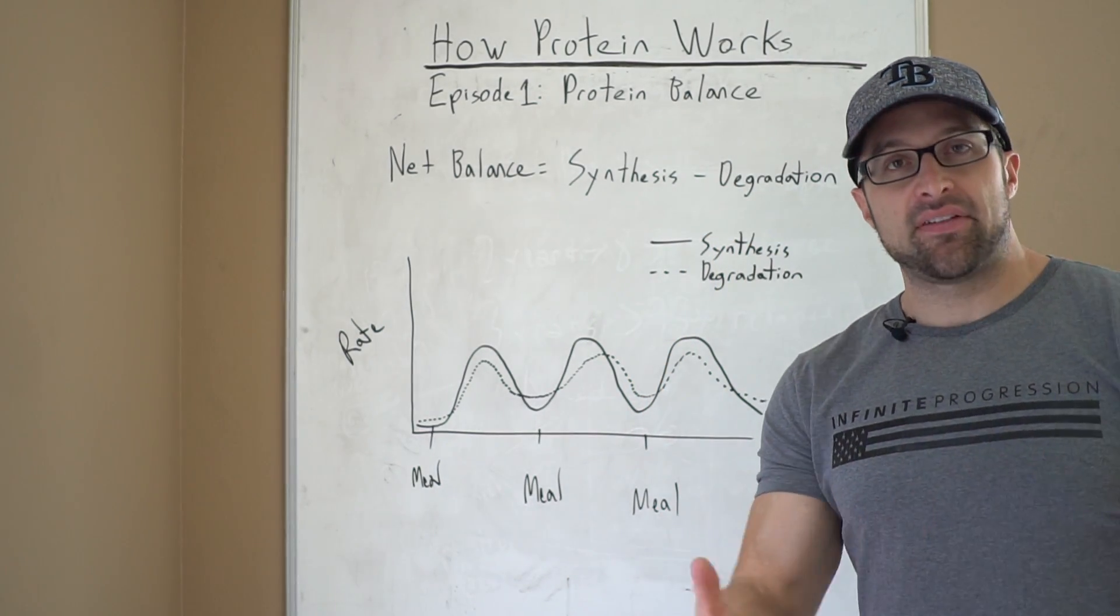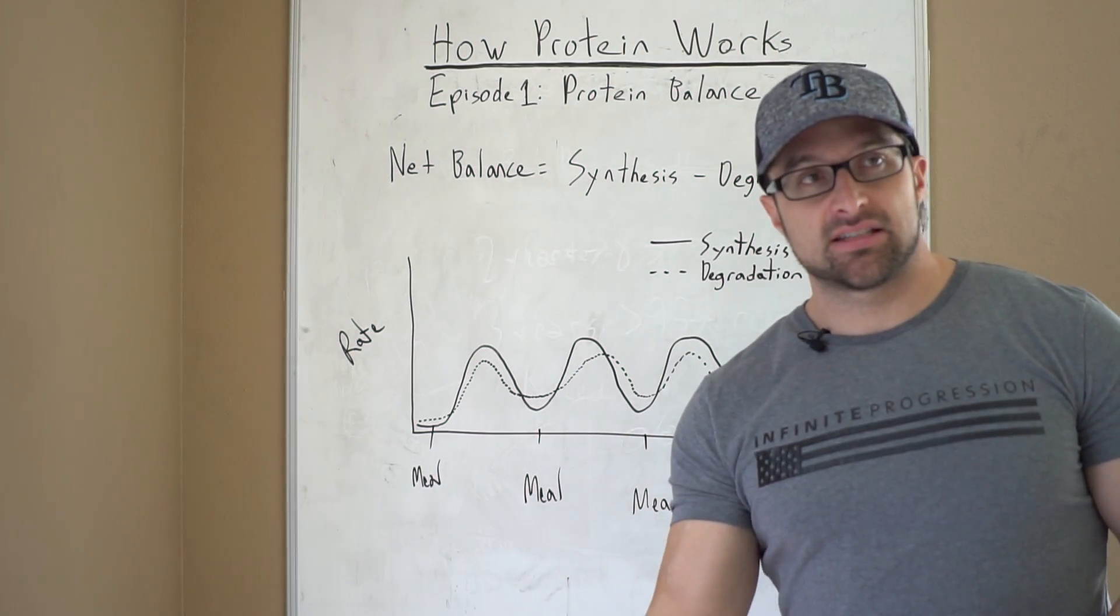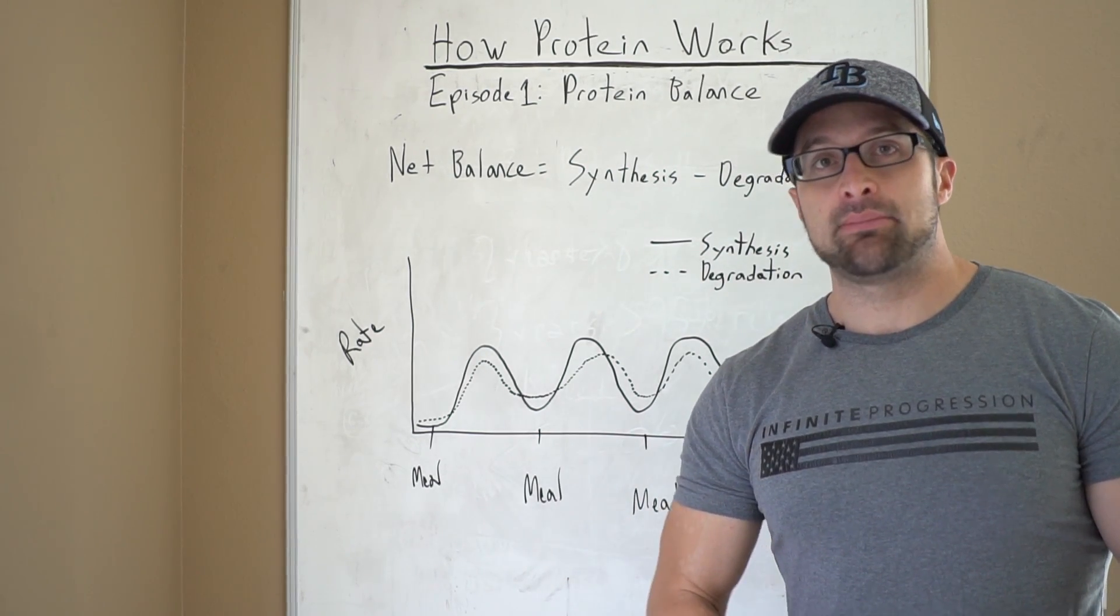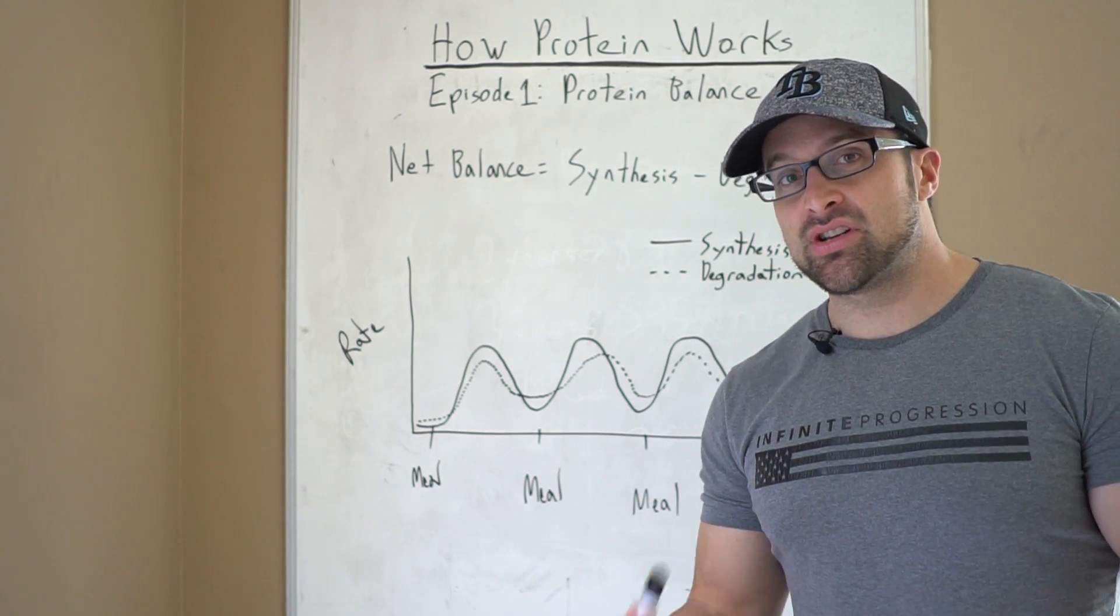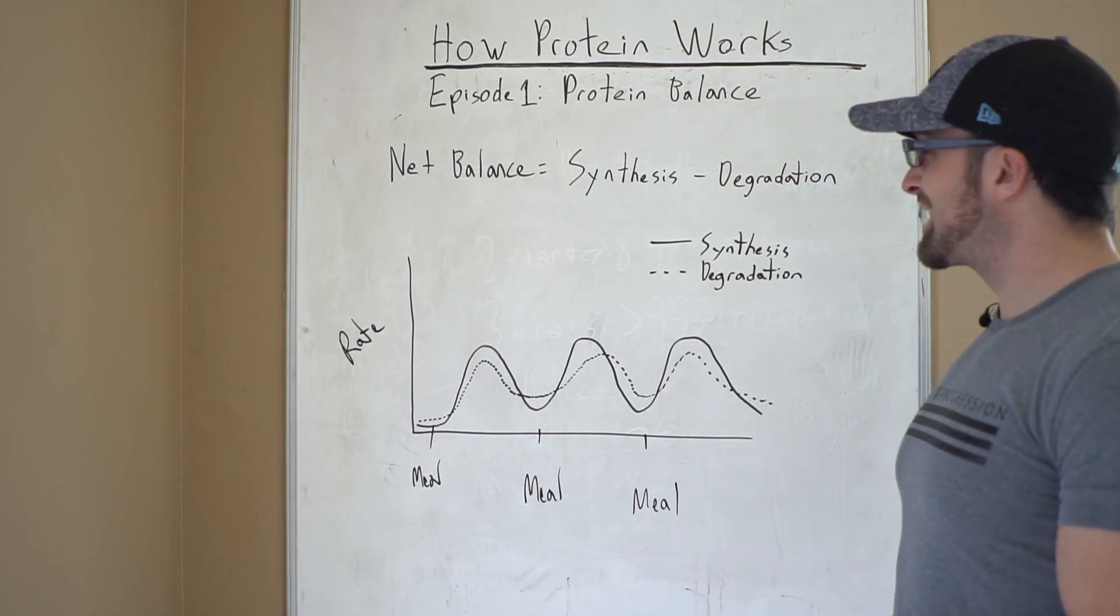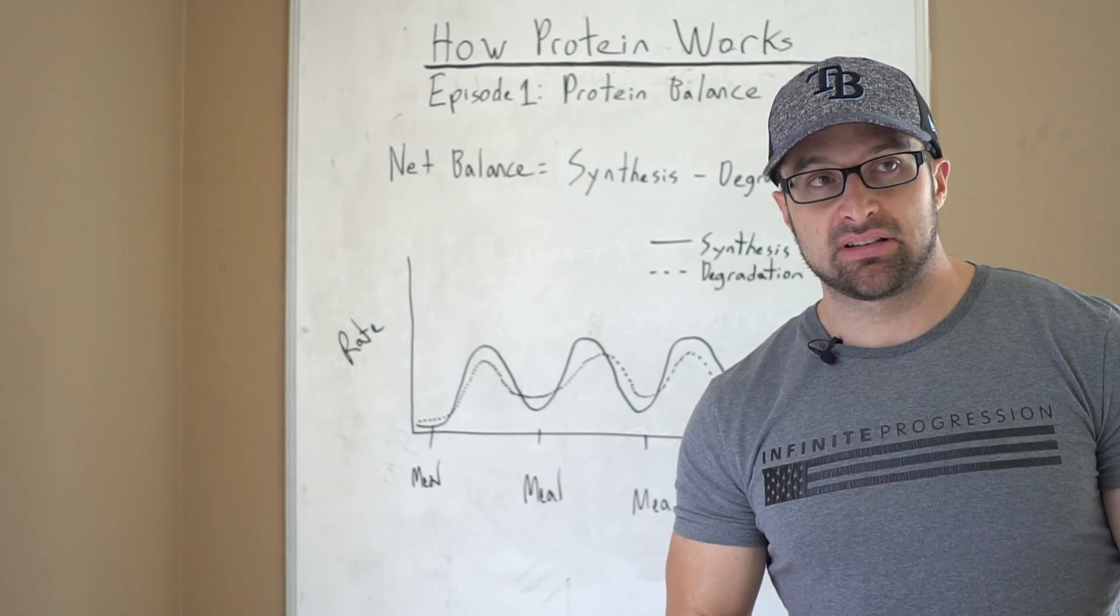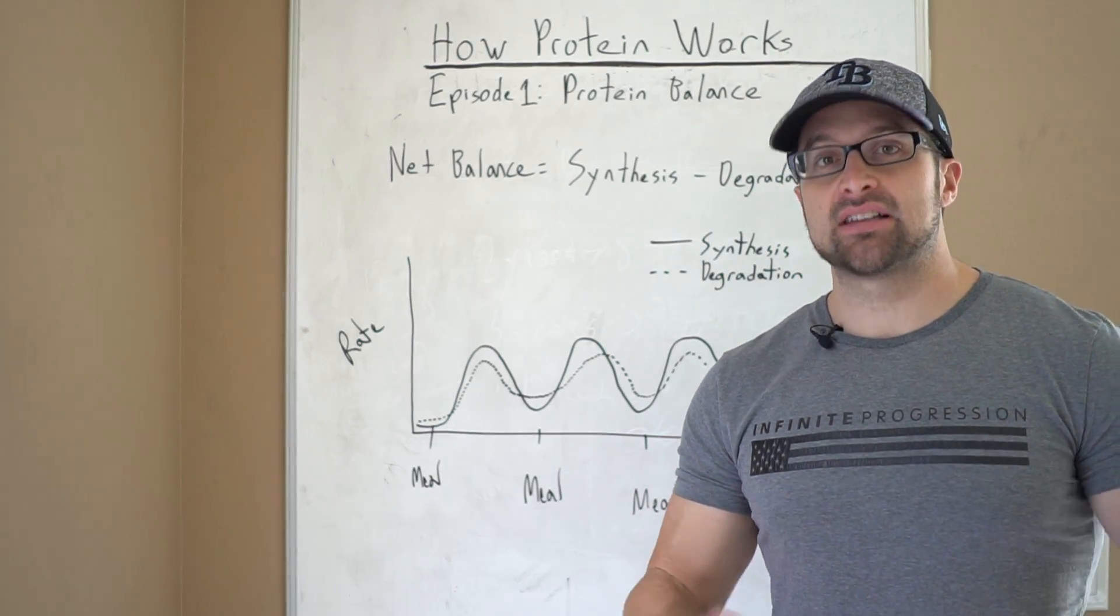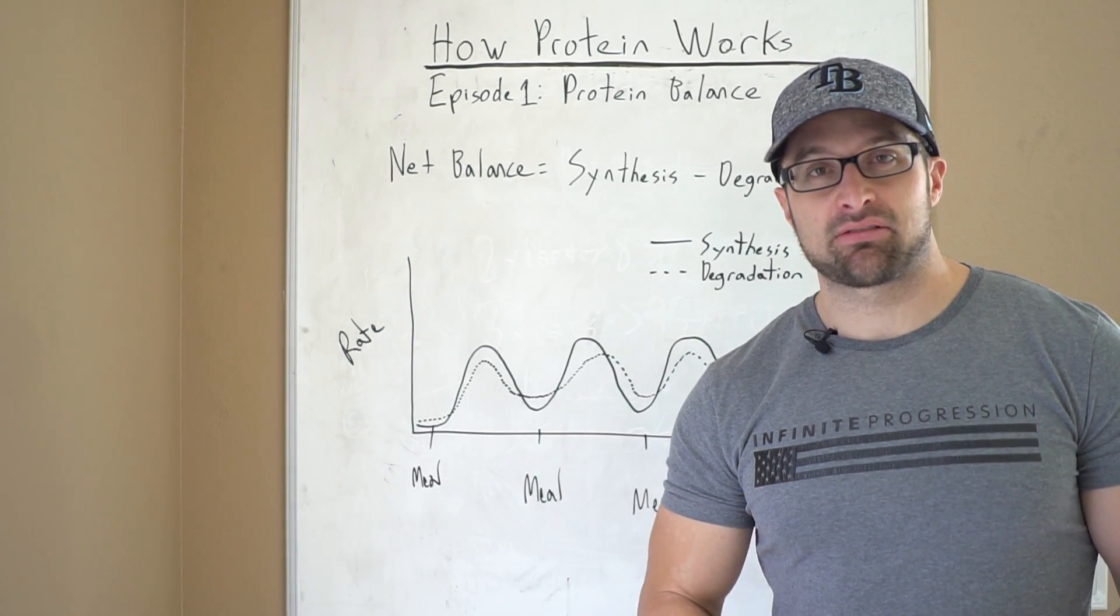So if you have a myofibril, for example, and your rate of synthesis on that particular myofibril exceeds the rate of degradation, that means you are making muscle faster than you are breaking it down. That is going to result in a net accretion of muscle protein. If degradation exceeds synthesis, that means you are breaking muscle faster than you are building it. That is going to result in muscle loss. Obviously, most of us out there who are interested in building muscle, we want synthesis to exceed degradation.